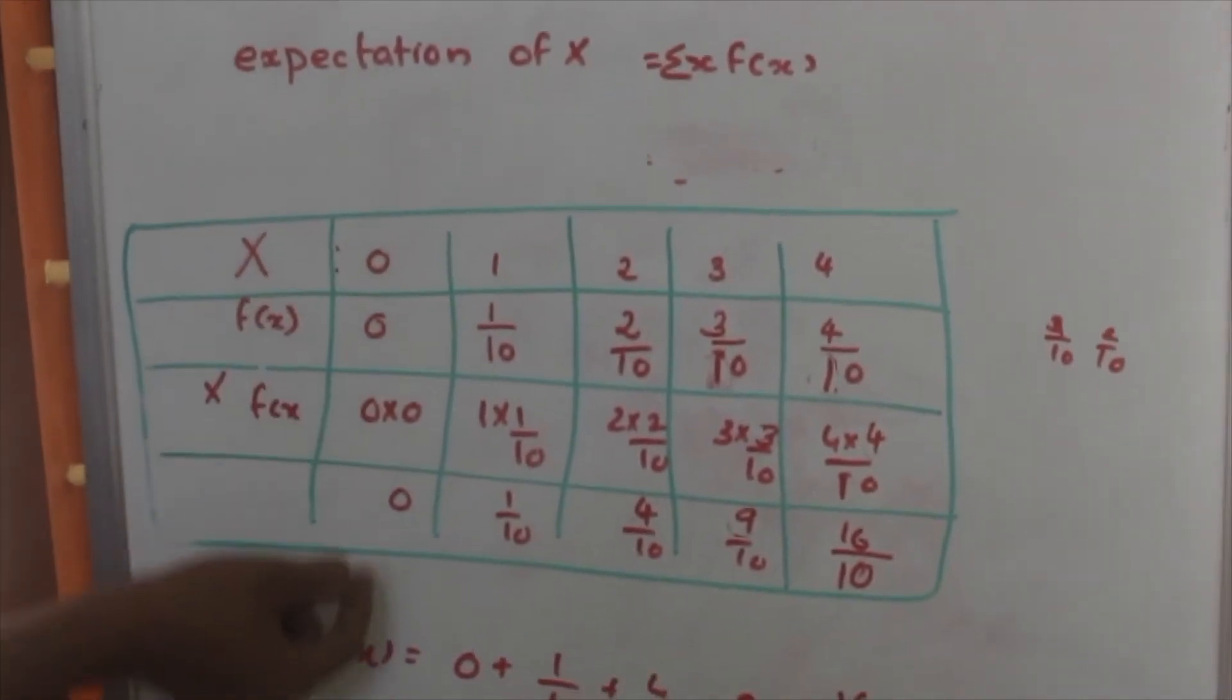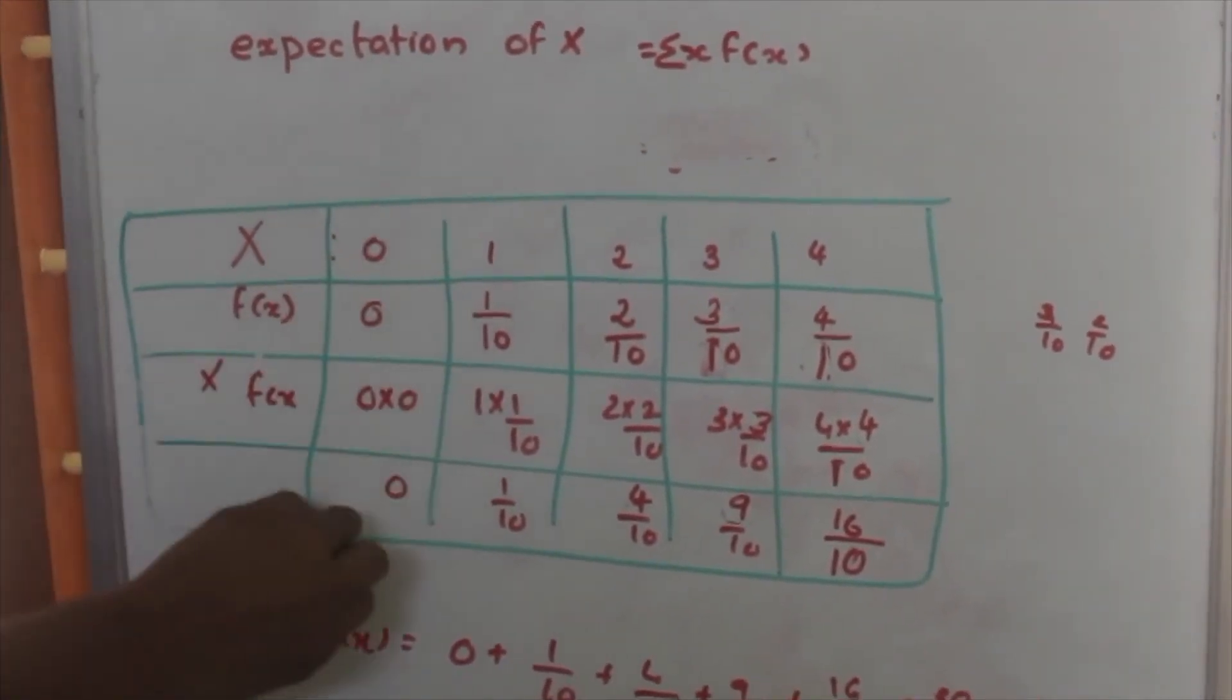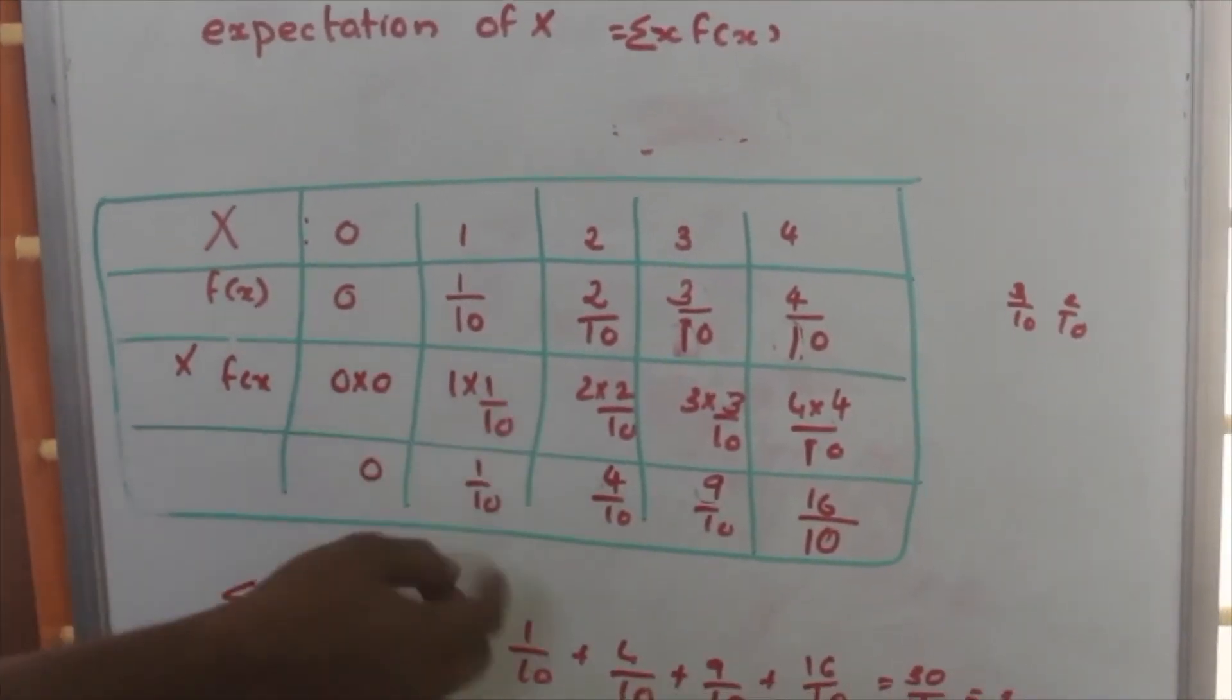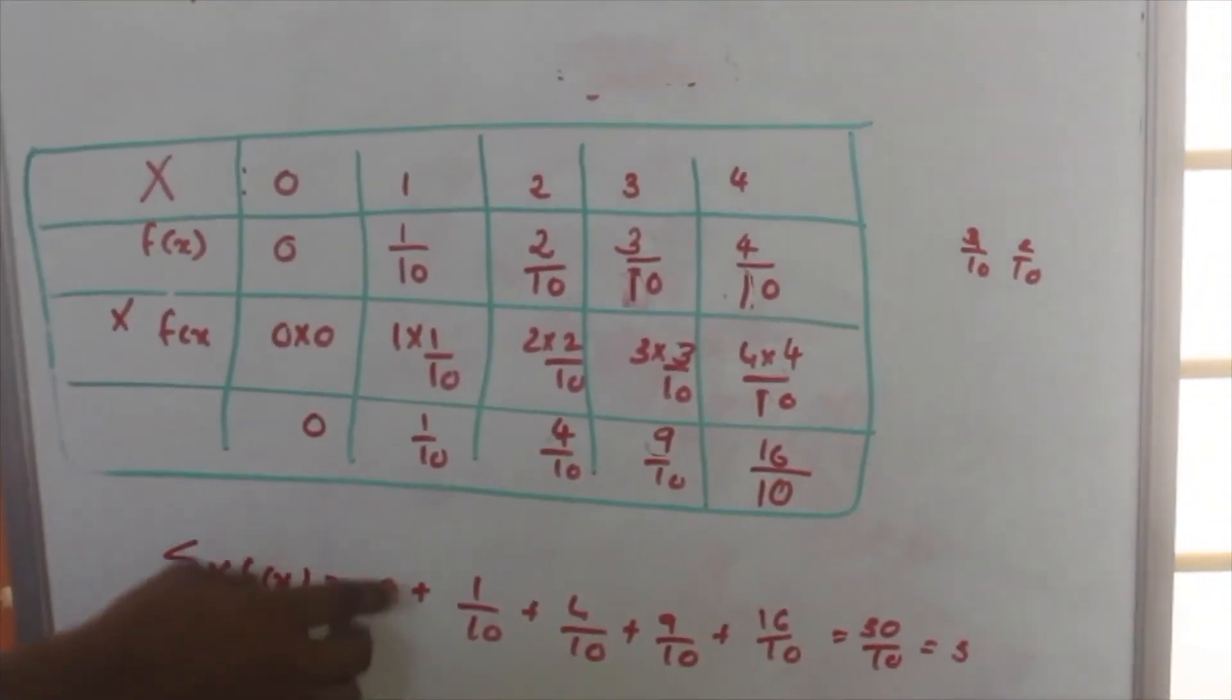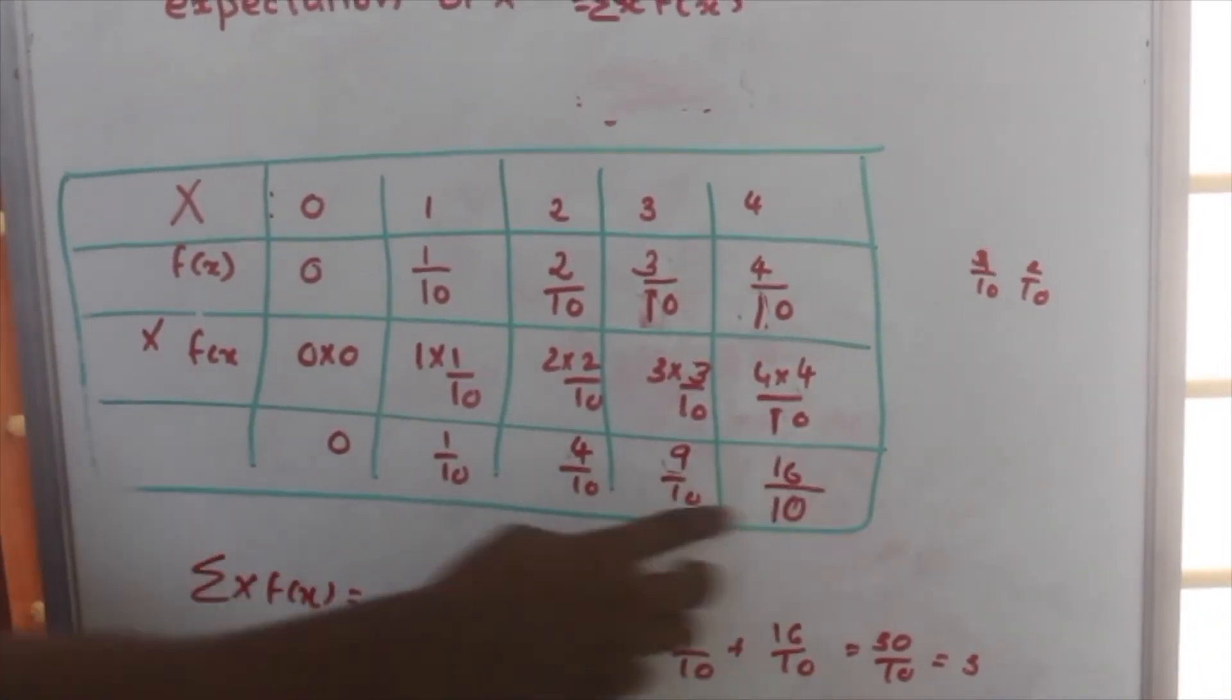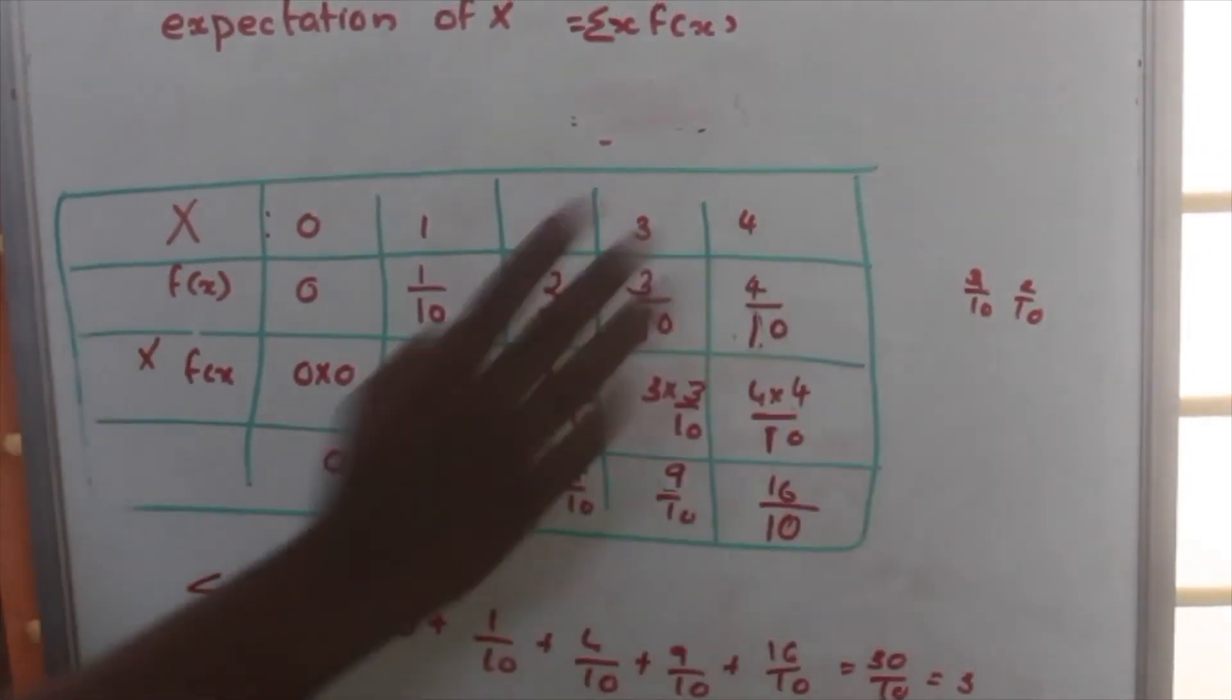So, for each discrete value of x, we have found x into f of x. Now, we have to find the sum of all this. Sum of x f of x, that is equal to 0 plus 1 by 10 plus 4 by 10 plus 9 by 10 plus 16 by 10. That is equal to 30 by 10 is equal to 3.